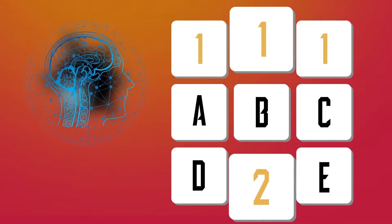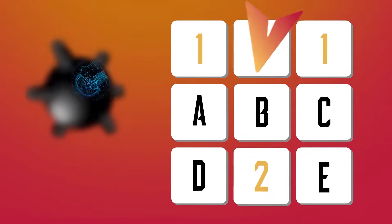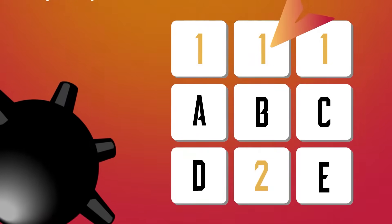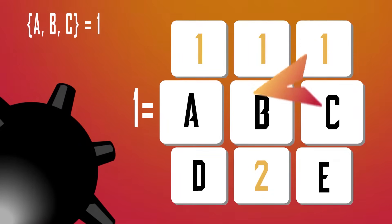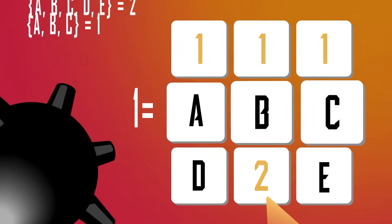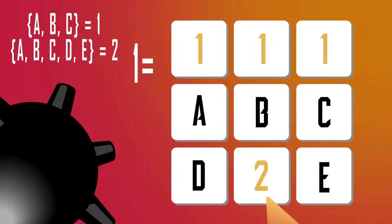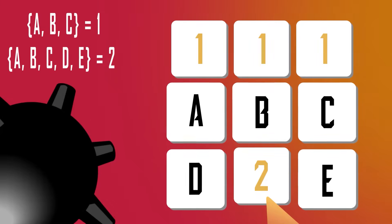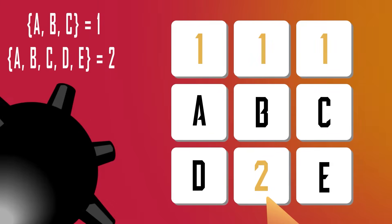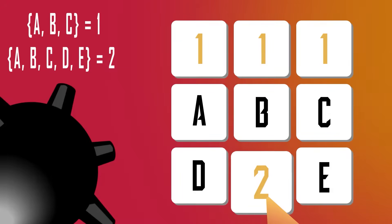Consider just the two sentences our AI would know based on the top middle cell and the bottom middle cell from this board. From the top middle cell we can have {A, B, C} = 1. From the bottom middle cell we have {A, B, C, D, E} = 2. Logically, we could then infer a new piece of knowledge that {D, E} = 1.